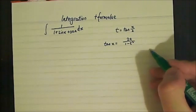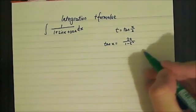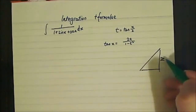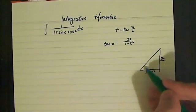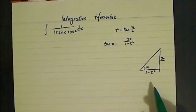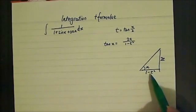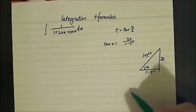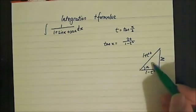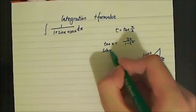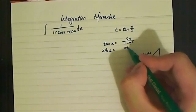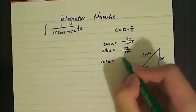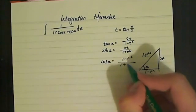In order to find what sin x and cos x are in terms of t, we can draw a quick triangle where we have the opposite over the adjacent, and this is x/2. As we can see, if we use Pythagoras, we end up getting √(1 + t²) as our hypotenuse. Now that we have our hypotenuse, we can readily say that sin x gives us 2t over 1 plus t squared, and cos x is 1 minus t squared over 1 plus t squared.